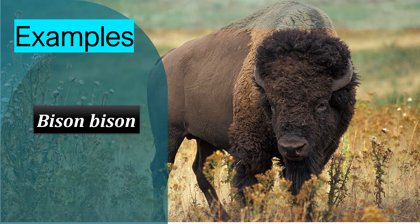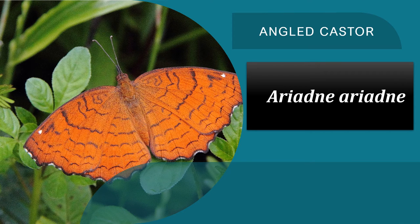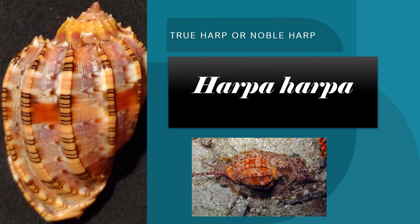One example of a tautonym is the American bison, or Bison bison. Another example is the black rat, or Rattus rattus. Then you have the arthropod, the angled caster, or Arianta arianta. Then you also have Harpa harpa from the phylum Mollusca, which is also known as the true harp or noble harp.